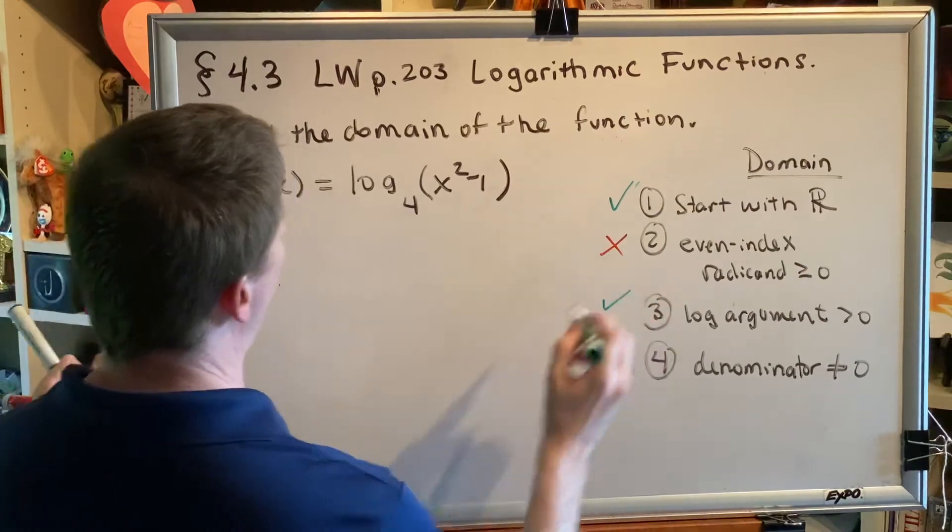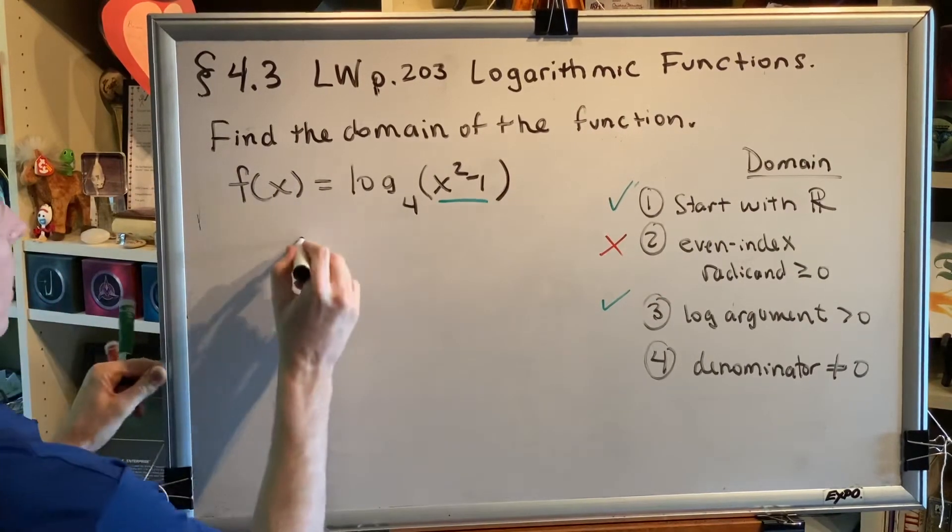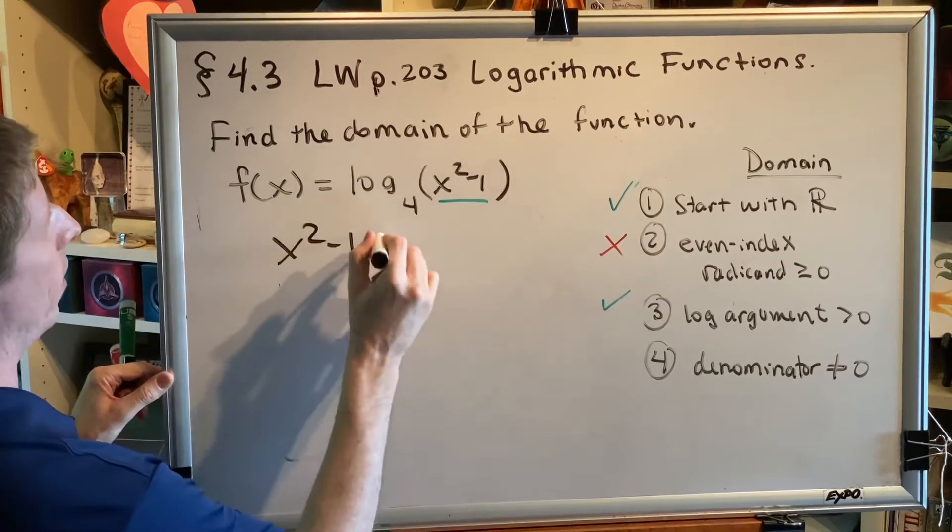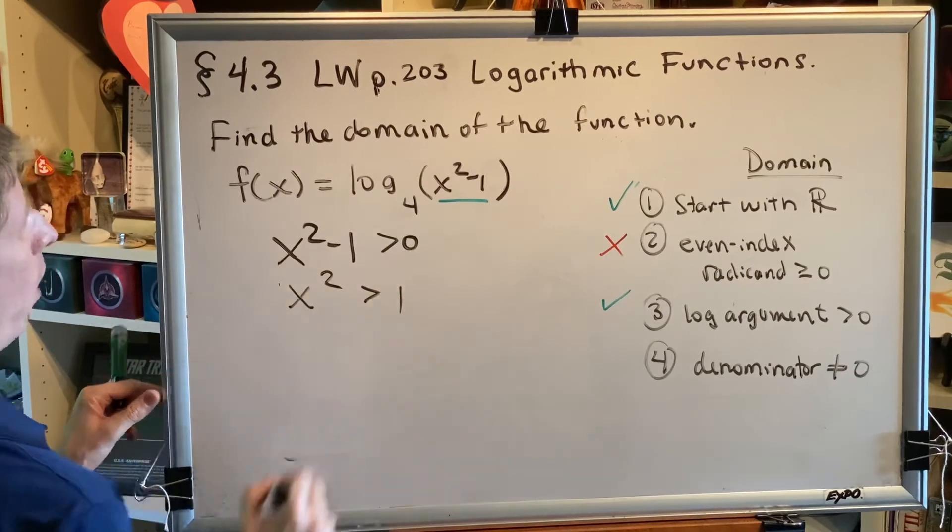Step 3, log argument greater than 0. Yep, we got that. This right here. So we need to make sure that x squared minus 1 is greater than 0. Add 1 to both sides, you get x squared is greater than 1.